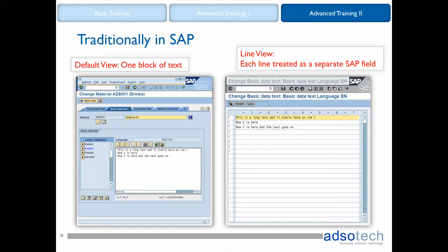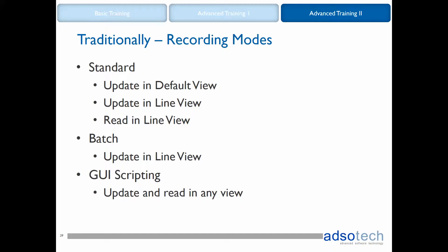Using the line view means you need to decide how many rows you will have in your script. And considering there is a maximum length for a single text row, it also means you decide on the maximum length of your text. Besides the screen view in SAP, we also need to consider the recording mode to be used when we take the traditional approach to recording a long text field.